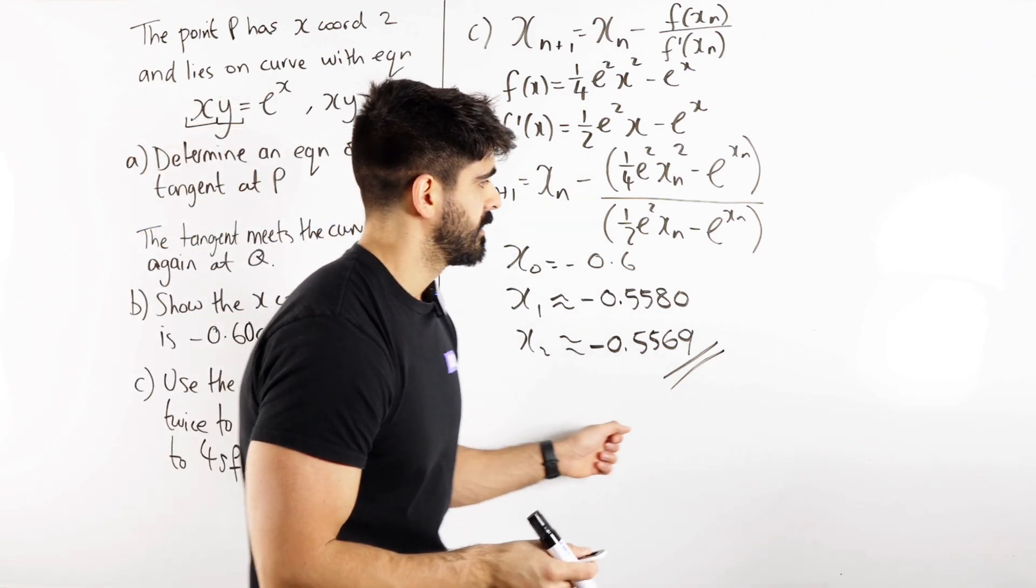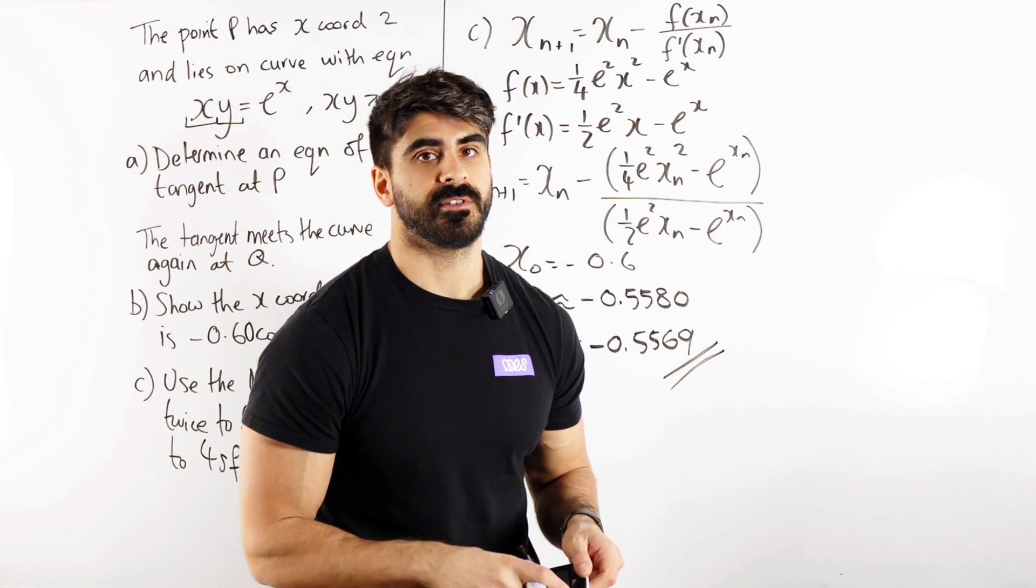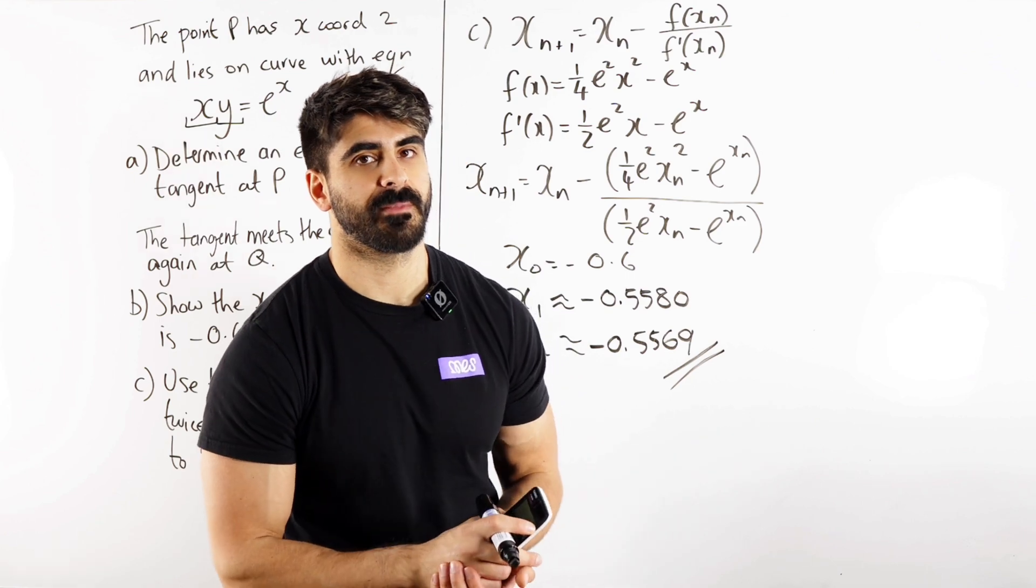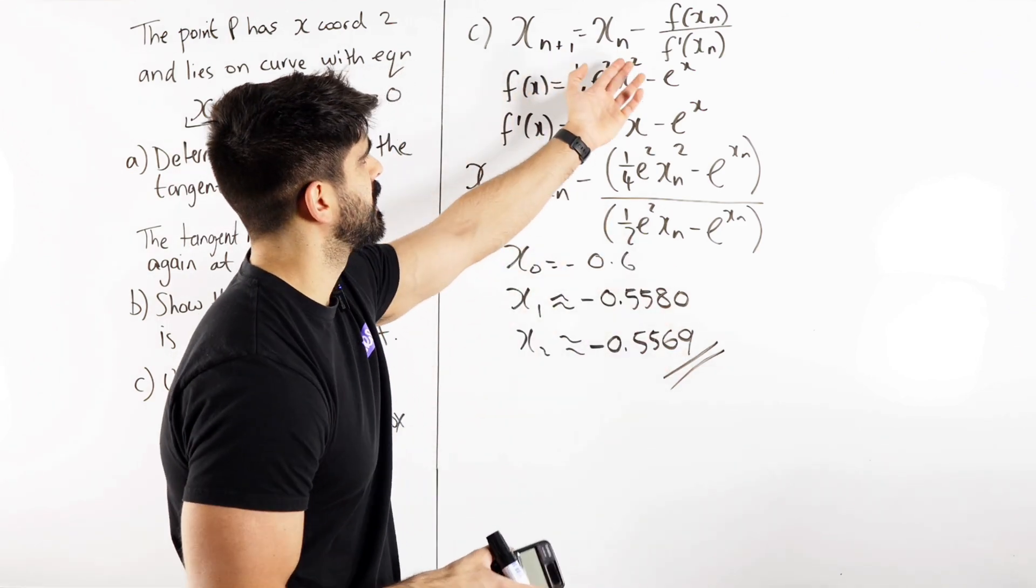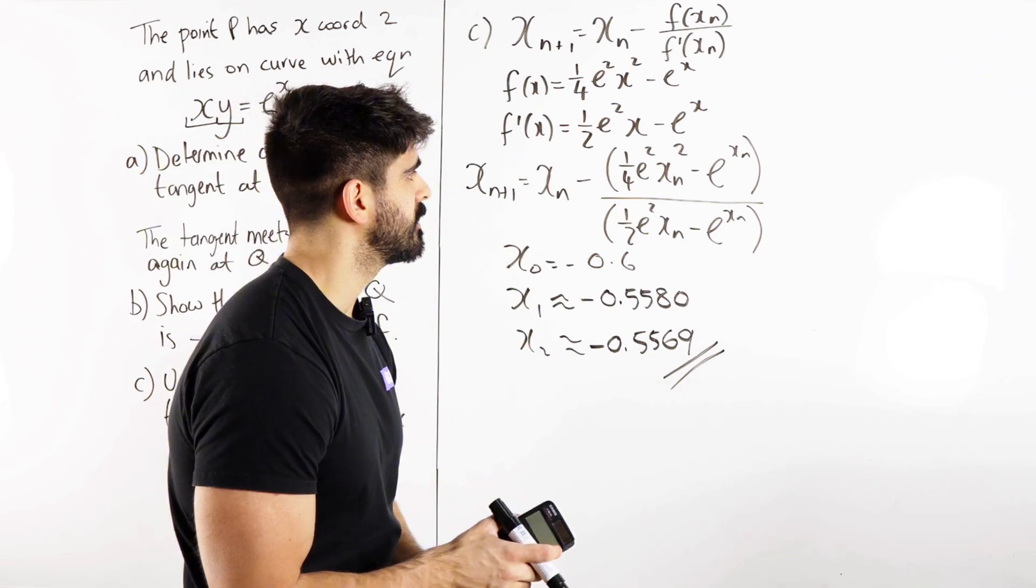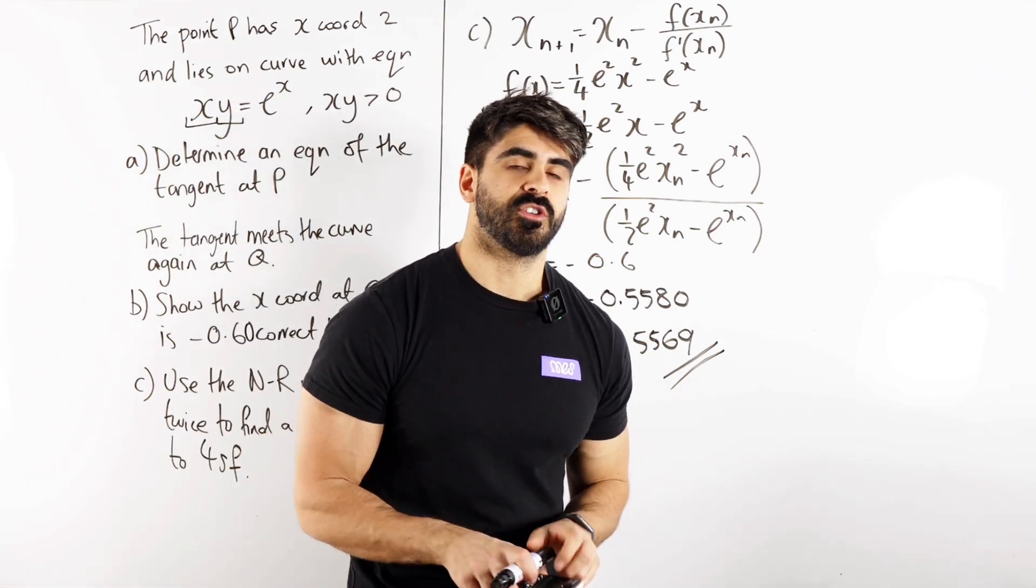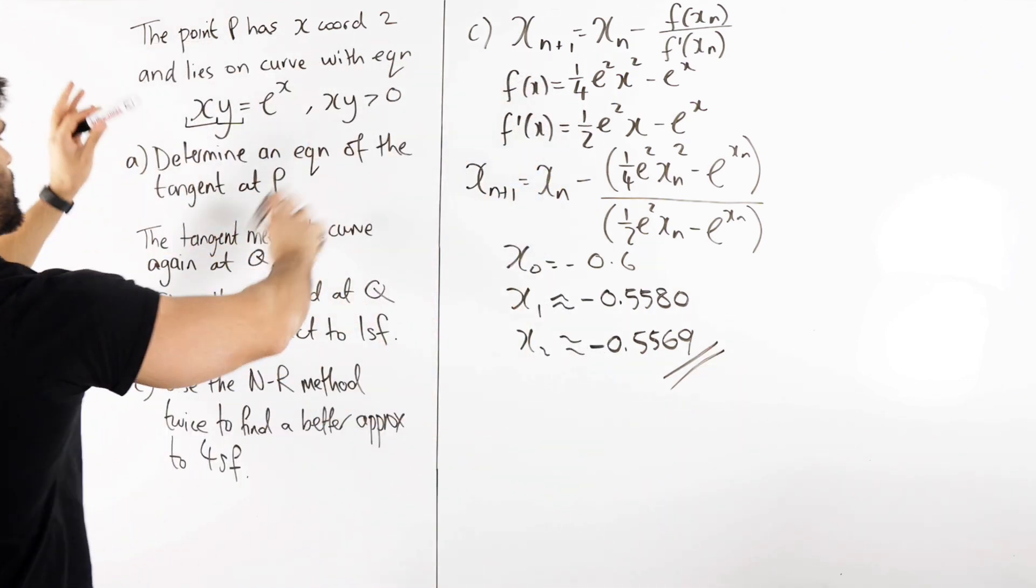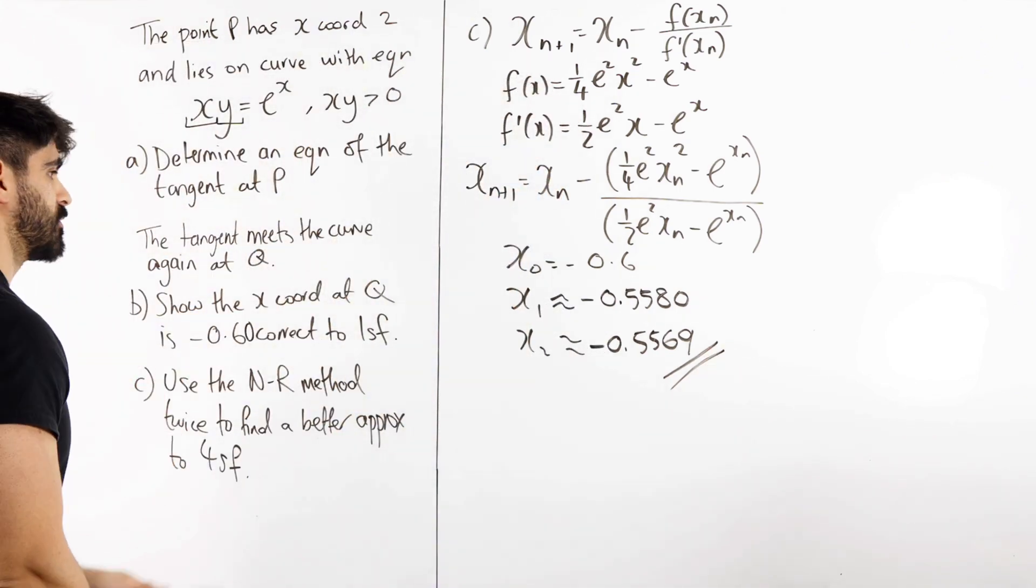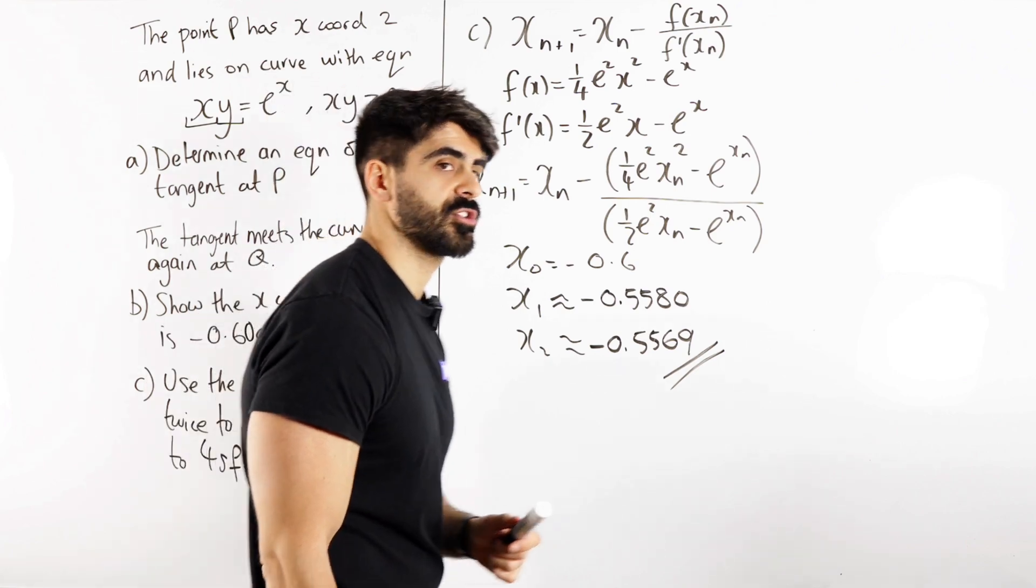Yeah guys, that is the Newton-Raphson method. I mean, the difference between the Newton-Raphson method and fixed point iteration, there's not much difference. The formula is slightly different. Newton-Raphson you have to differentiate and that's it. But guys, numerical methods shouldn't really be that big of a deal. Obviously, the beginning bit is very algebraic, but the actual process of the Newton-Raphson method is not so bad.